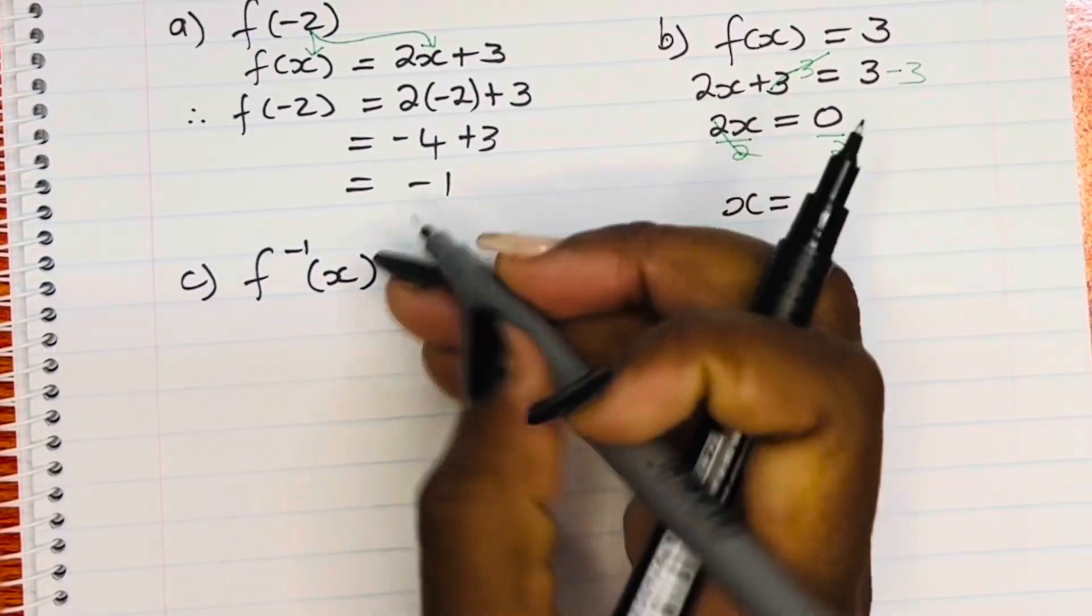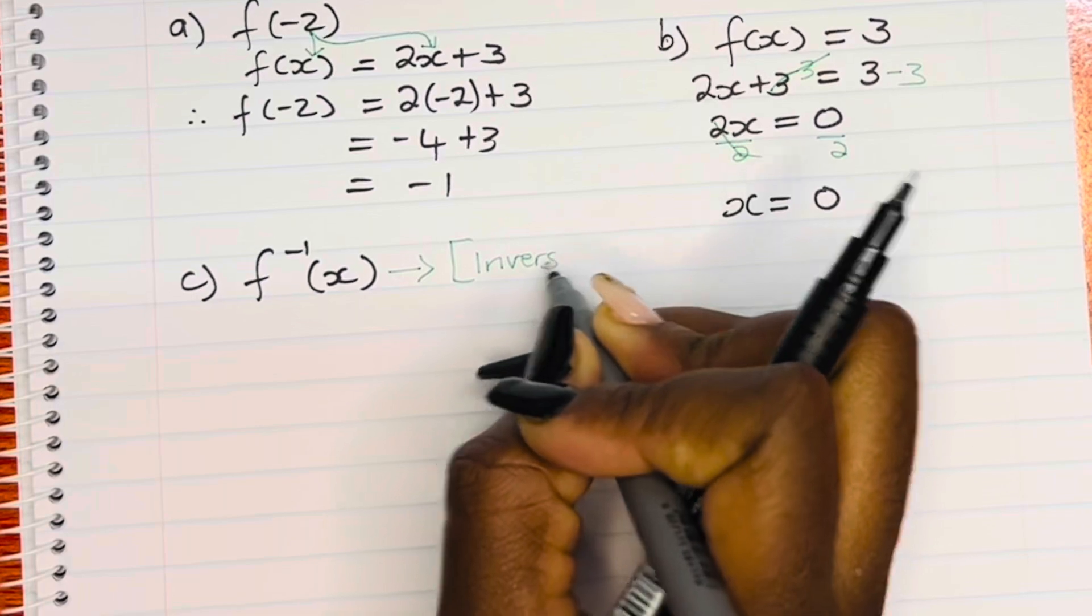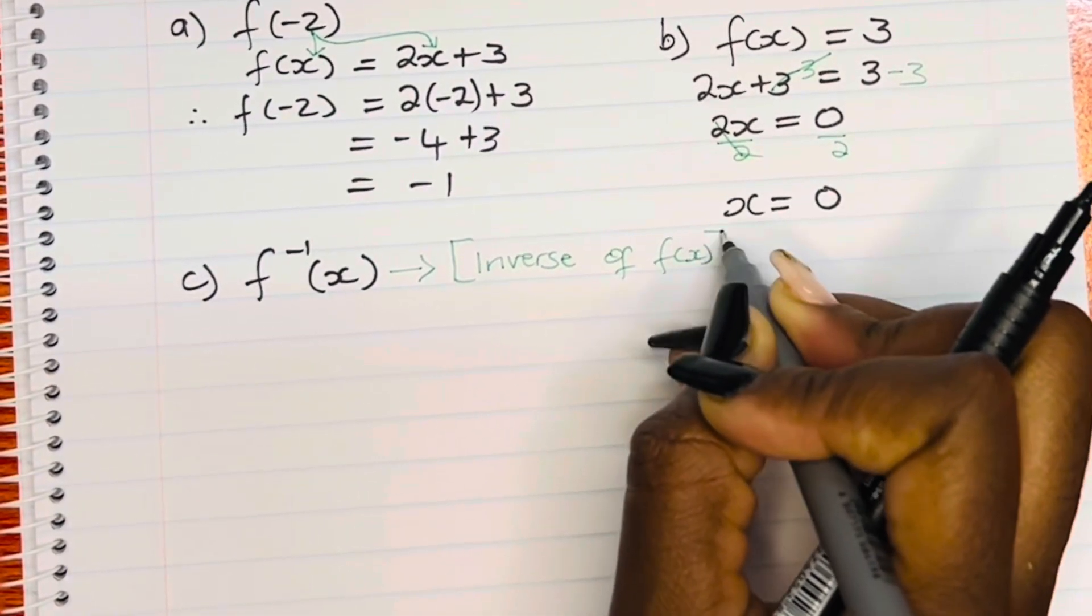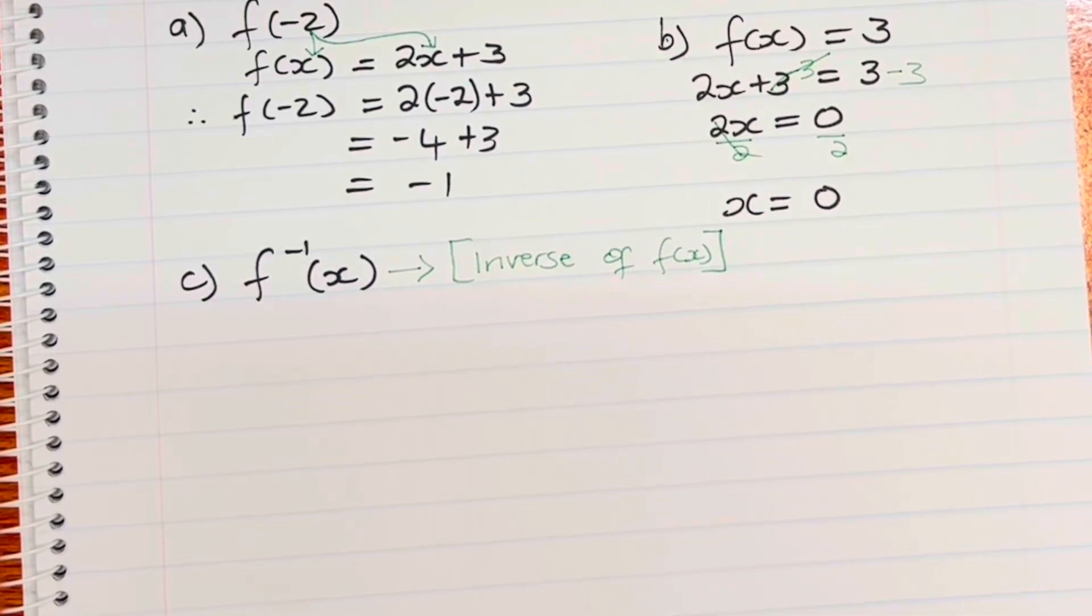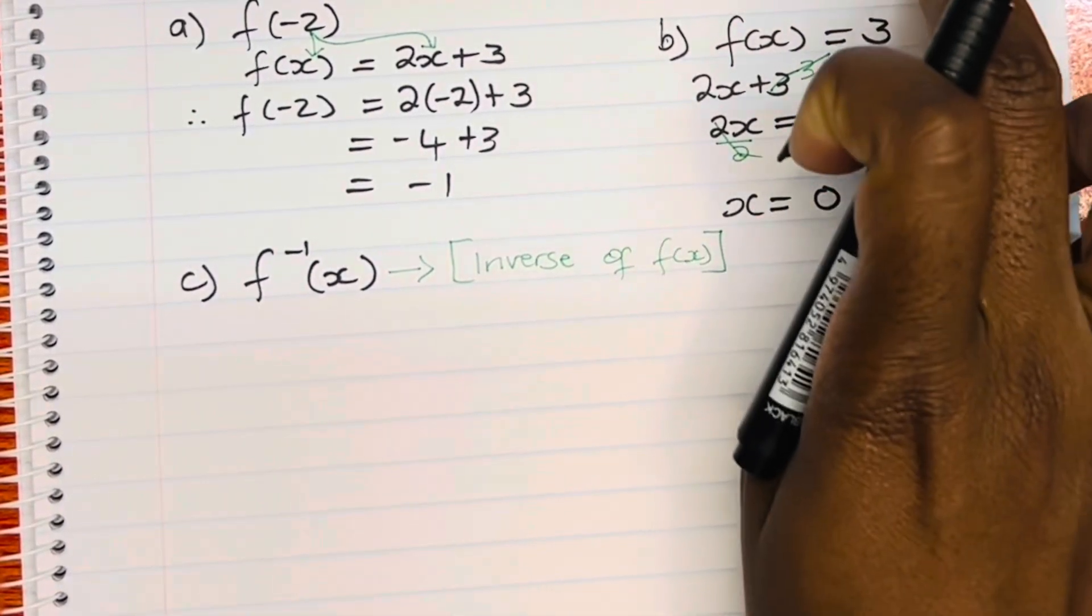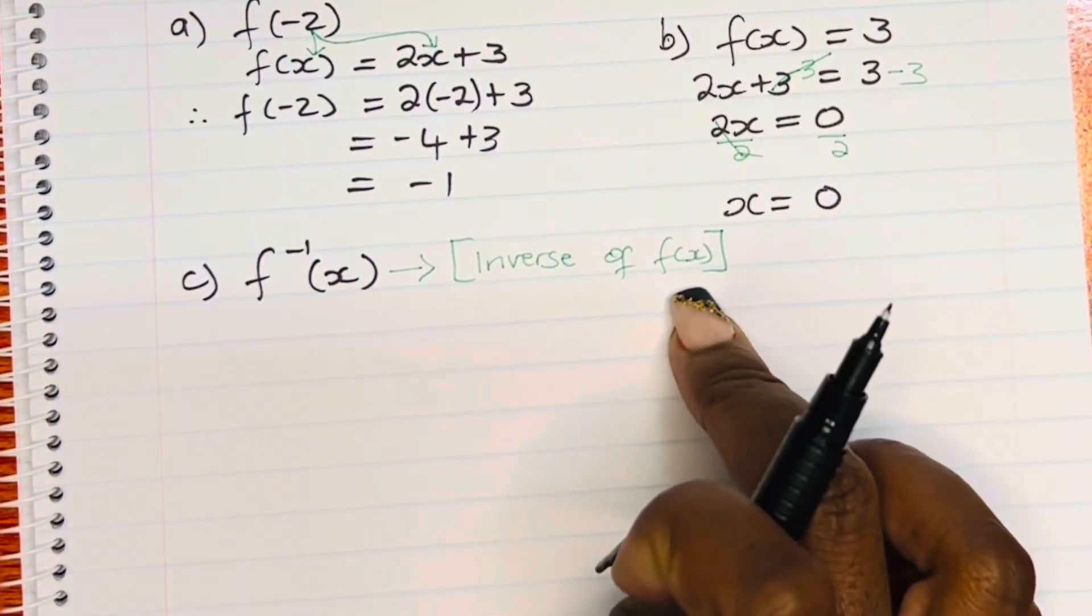So the third and last kind of question that we can expect when we are working with one function is to find the inverse of f of x. Or it can be denoted as f to the power negative 1, and then we put x in brackets. So those two things mean the same thing. They could say find, then they just put that notation, or find the inverse of f of x.